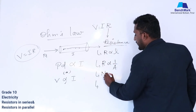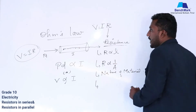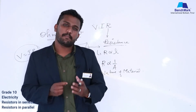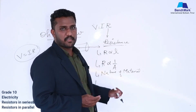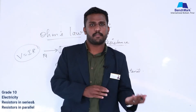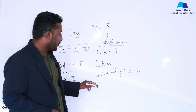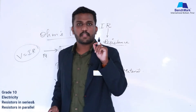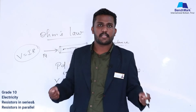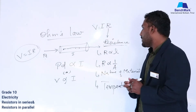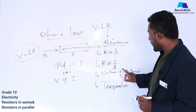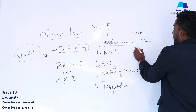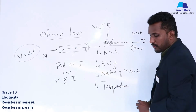The third factor is the nature of the material. If you take two different materials like plastic and silver or plastic and aluminum, the resistance will be different for each material. The fourth factor is temperature: if two materials have different temperatures, resistance will also change accordingly. So resistance depends on four factors: length, area, nature of material, and temperature. The unit of resistance is Ohm, symbolized by Ω.